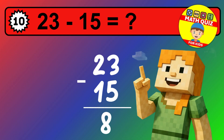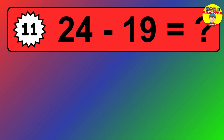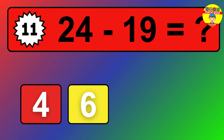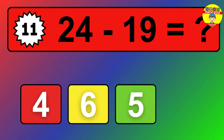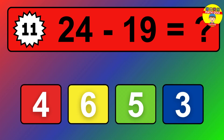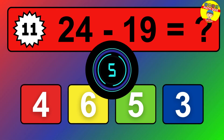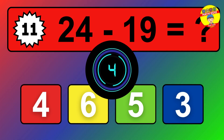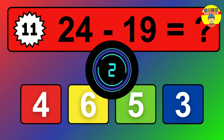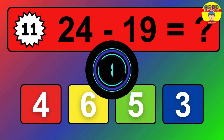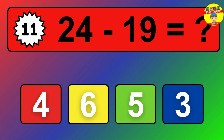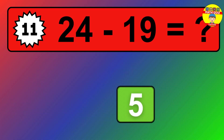We start with the units. 2 minus 4 is not possible, so we need to regroup. We take one 10 from the tens column. Now we have one tens, and the units become 12. Now we subtract. 12 minus 4 is 8. Then we go to the tens. 1 minus 1 is 0. The final answer is 8.